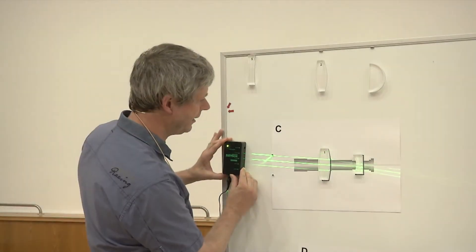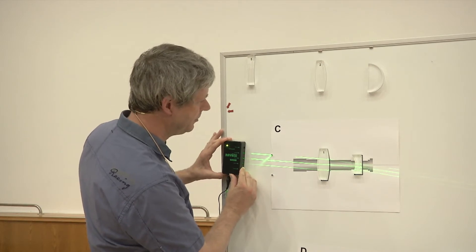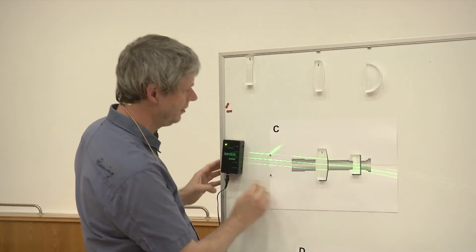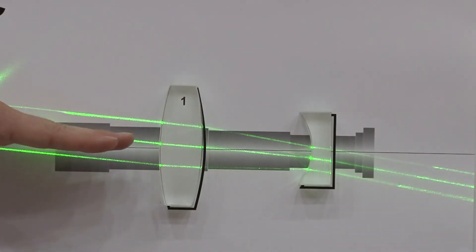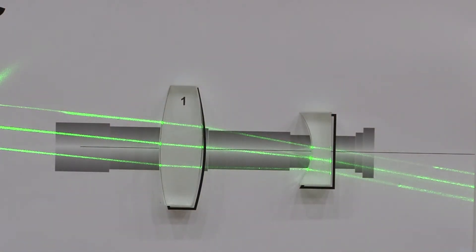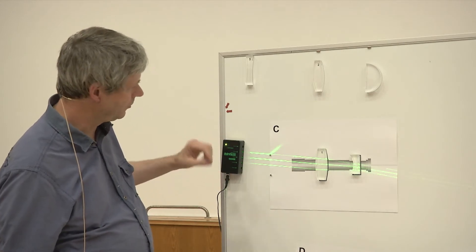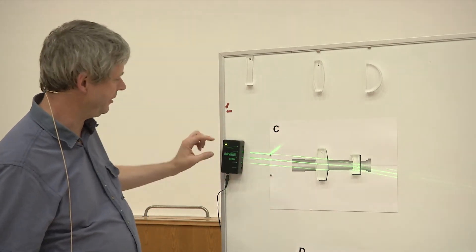When I tilt this a little bit, you can see that a relatively small angle becomes a larger angle this way. So this means we get a magnification.